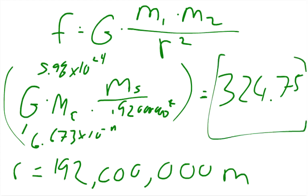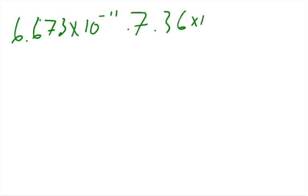And so we've got to subtract away the force of gravity from the Moon. So the Moon, the gravitational constant, 6.673 times 10 to the negative 11th, multiplied by the mass of the Moon is 7.36 times 10 to the 22nd.